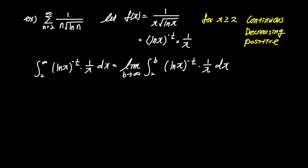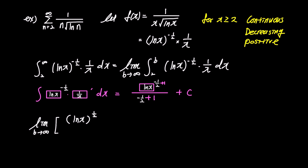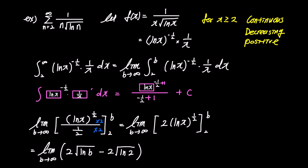The integral of (ln x) to the power of negative one-half times 1 over x from 2 to infinity can be expressed using the limit as the limit of the integral from 2 to b, where b goes to infinity. Using the box rule, the integral of box to the power of n multiplied by box prime simplifies to box to the power of n plus 1 over n plus 1 plus c. Here, box is ln x, n is negative one-half, and box prime is 1 over x. Thus, we obtain the limit of (ln x) to the power of one-half over one-half, which simplifies to the limit of 2 times (ln x) to the power of one-half.